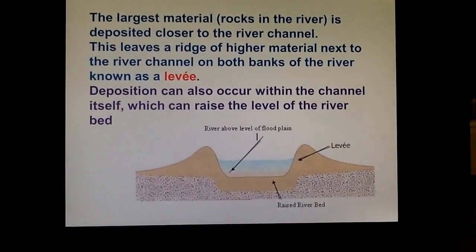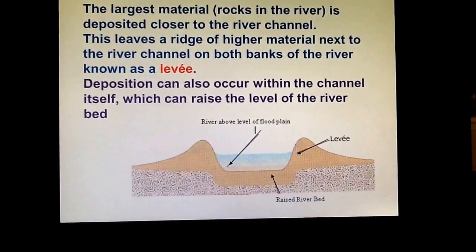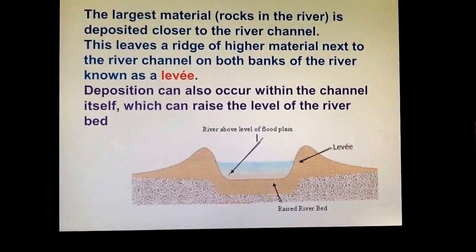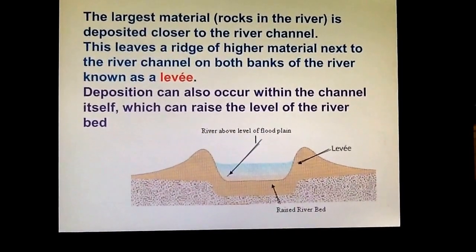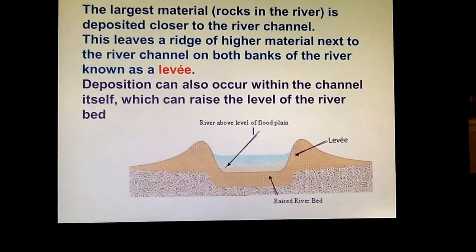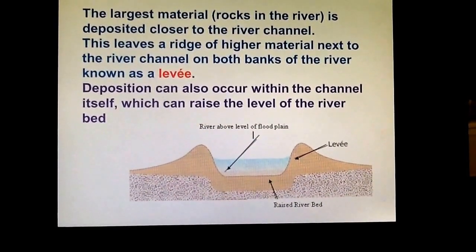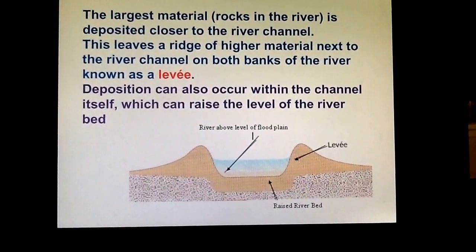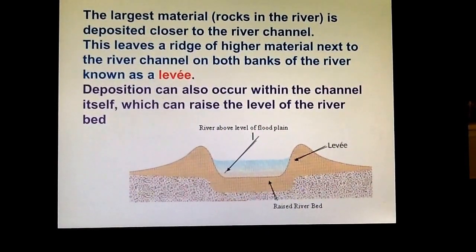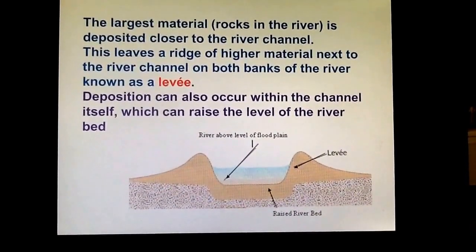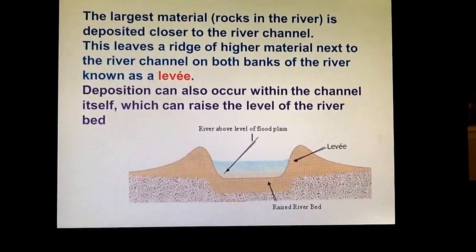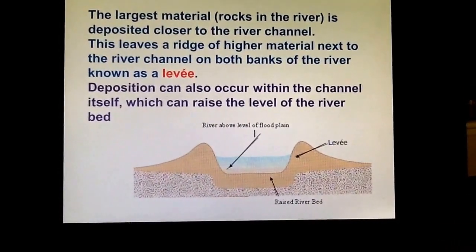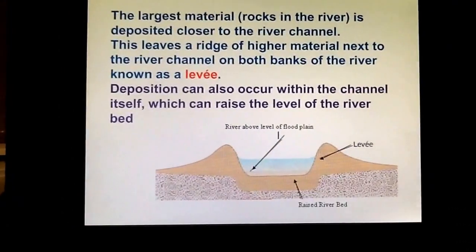When a river floods, the water spreads out over a larger area and loses a lot of energy. The larger material takes more energy to be carried, so it gets dropped off first — large material like rocks deposited right next to the river channel. Smaller sand and sediment can be carried a little bit further away. Because of this, you get a ridge of higher material next to the river channel on both sides, and this is called a levee.